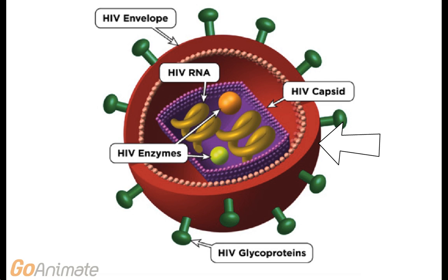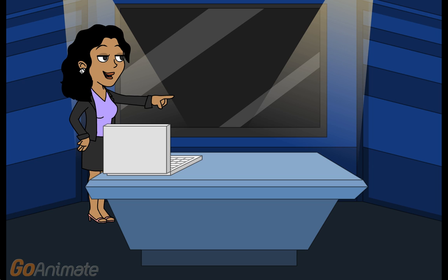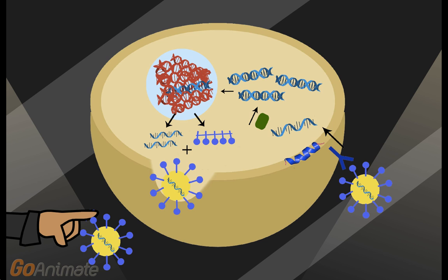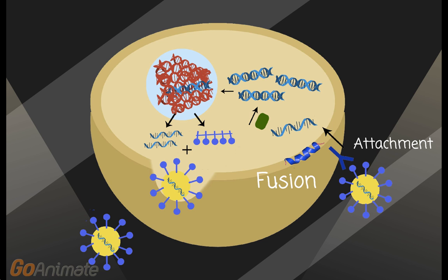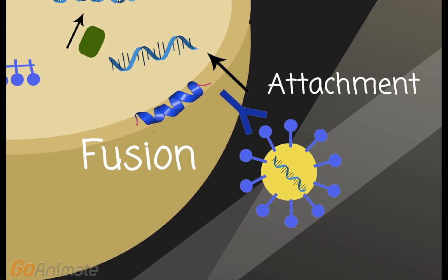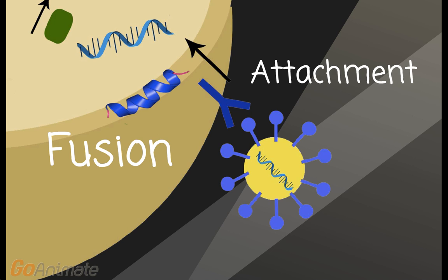Now, let's take a look at the life cycle of the HIV virus, which is split into seven steps. Firstly, during attachment, the HIV virus attaches itself to receptors on the host cell surface — much like the criminal learned to access the Mint, HIV has learned to access human cells. Secondly, we have fusion. During fusion, the envelope surrounding the HIV virus fuses with the cell surface of the host cell.